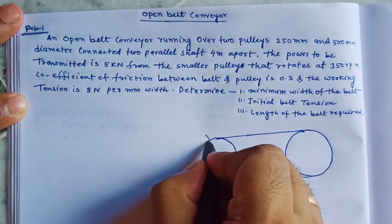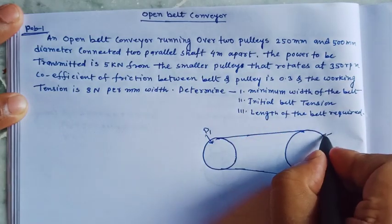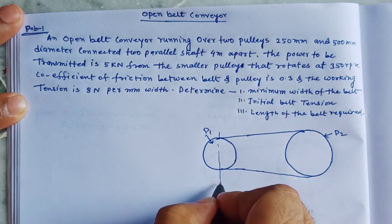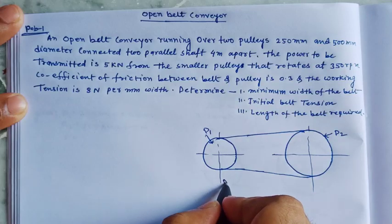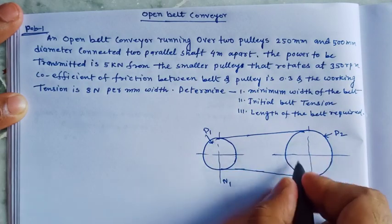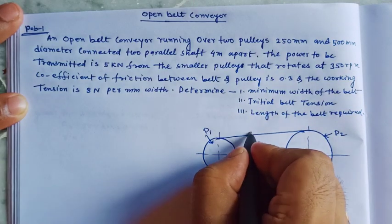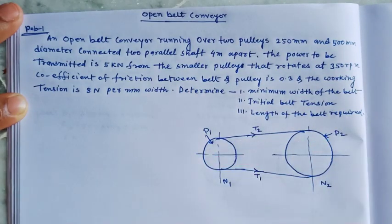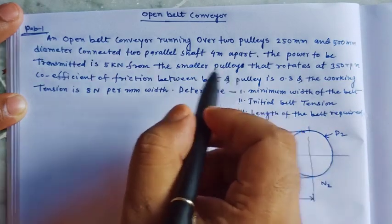Considering the diameter of the smaller pulley as d1 and the bigger pulley having diameter d2. This is the center of the smaller pulley and this is the center of the bigger pulley. The speed of the smaller pulley is n1 and this pulley has speed n2. This part has tension T2 and this is T1. The distance between the two shafts is x.